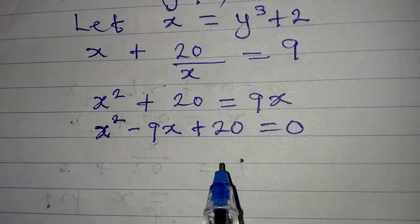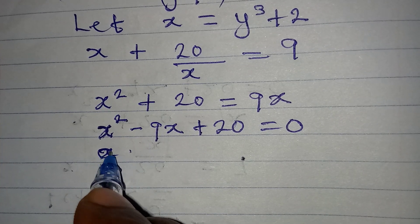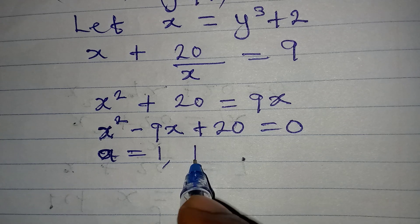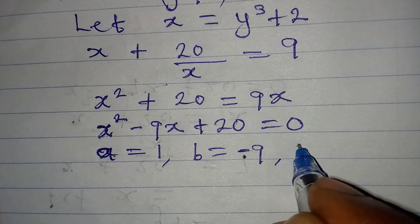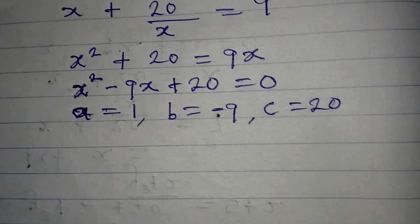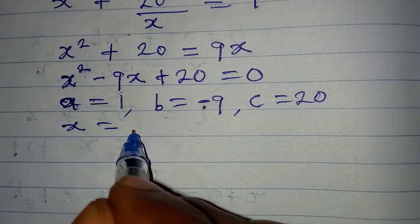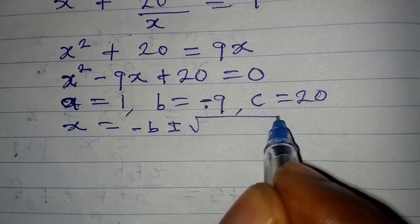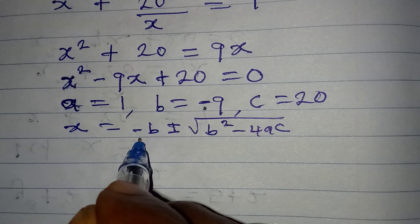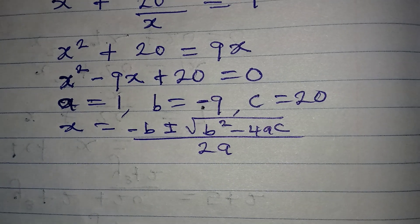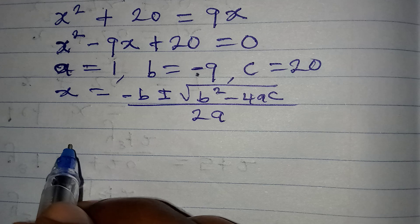Let us use the quadratic formula method. x is unknown, with a = 1, b = -9, and c = 20. The formula is x = (-b ± √(b² - 4ac)) / 2a. Now let's substitute a, b, and c into the formula.